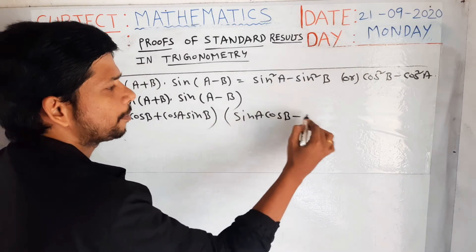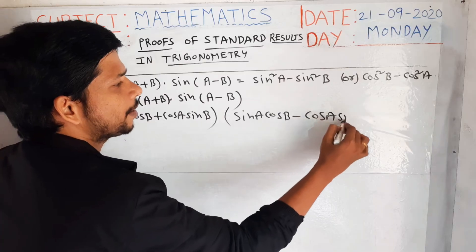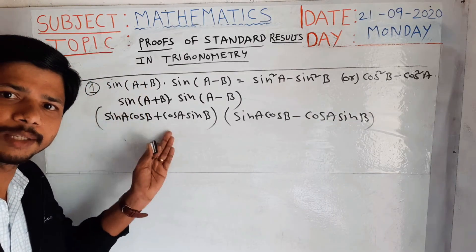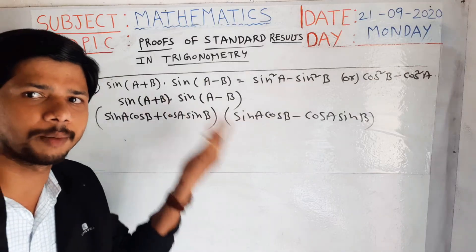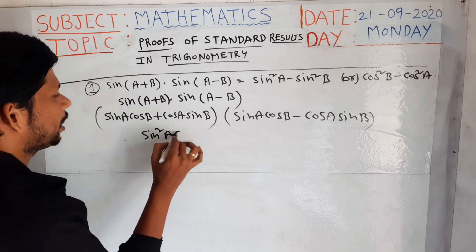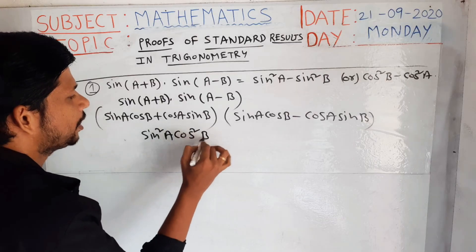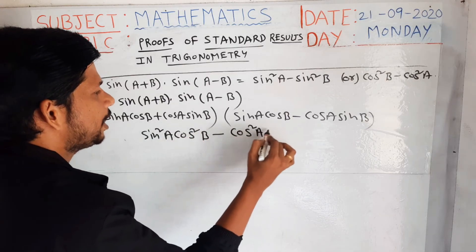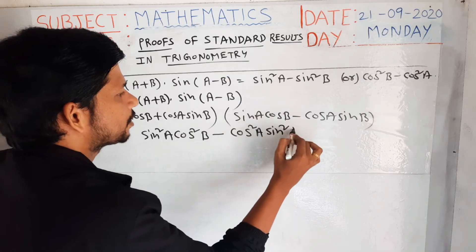This is in the form of (a+b)(a-b), which means a² - b². So we get sin²(a)cos²(b) - cos²(a)sin²(b).